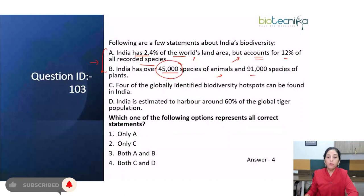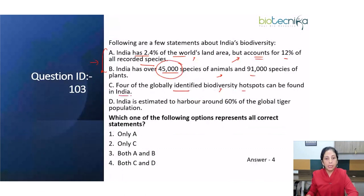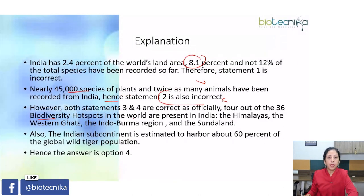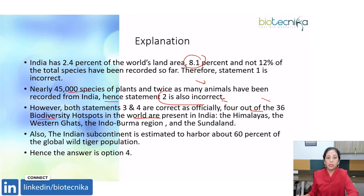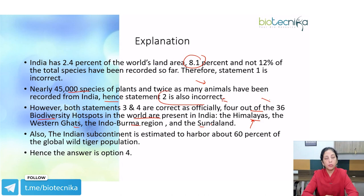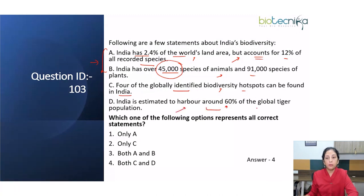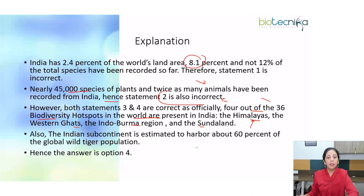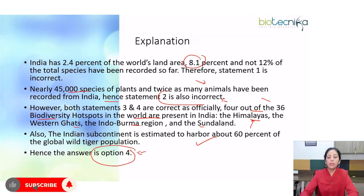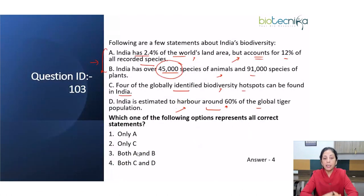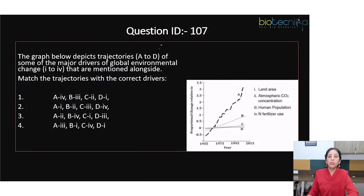Four of the globally identified biodiversity hotspots can be found in India — this is true. Out of the 36 hotspots present in the world, four are present in India: the Himalayas, the Western Ghats, the Indo-Burma region, and the Sundaland. The next statement says India is estimated to have around 60 percent of the global tiger population, which is again true. Therefore, option 4 — which combines statements C and D — is correct.